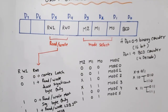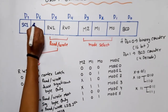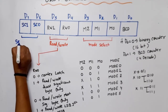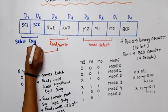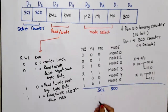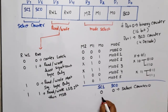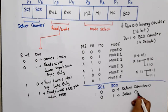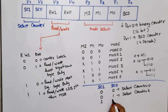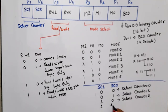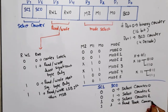The remaining two bits are D7 and D6, which are SC1 and SC0, used to select the counter. The table is: SC1 SC0 = 0 0 → select counter 0; 0 1 → select counter 1; 1 0 → select counter 2; and 1 1 → read-back command, which is valid only for 8254 (not 8253).